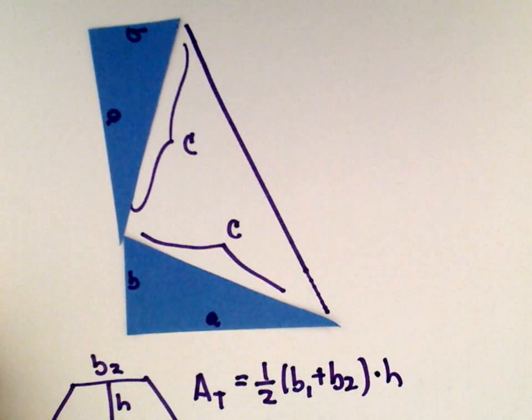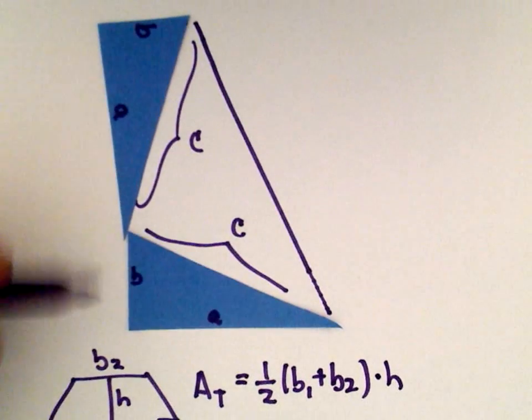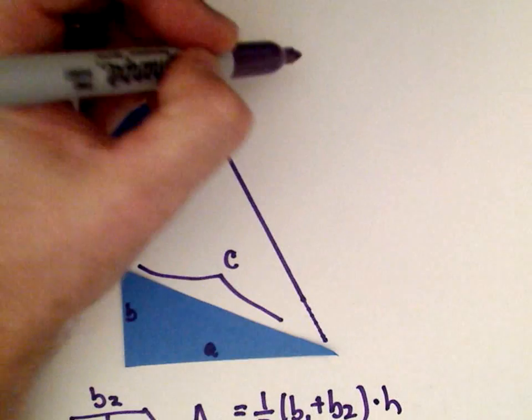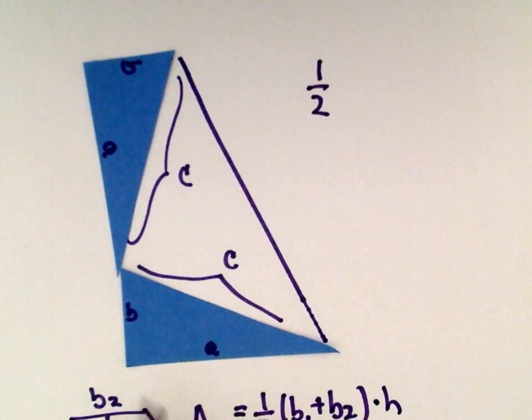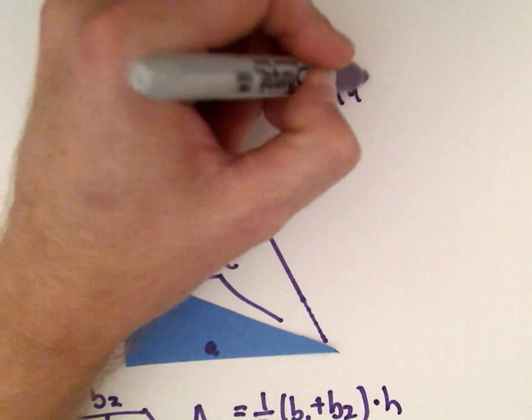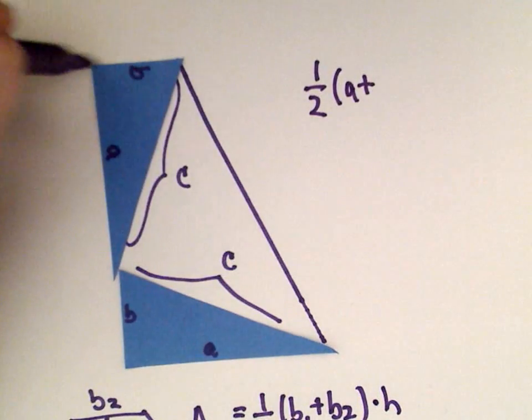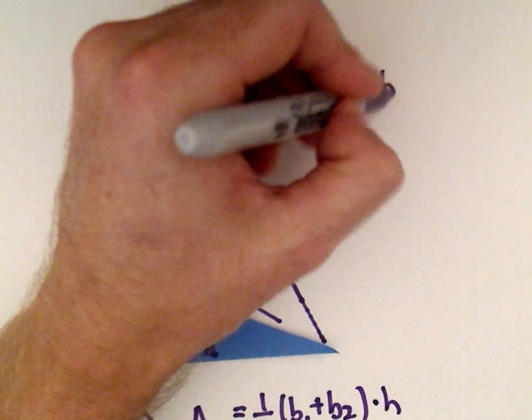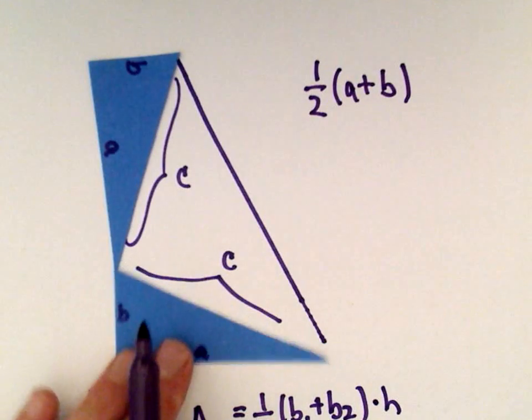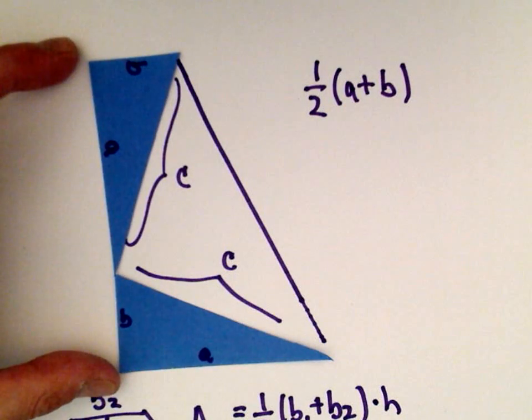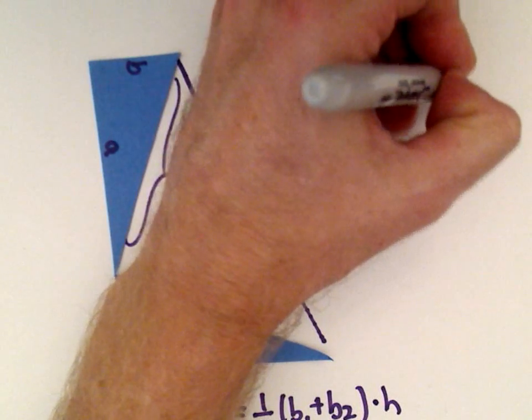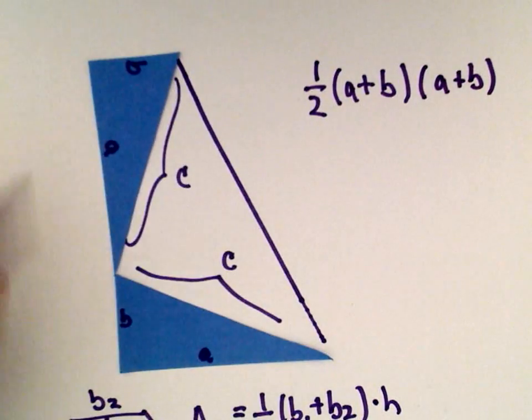If we look at our trapezoid, we've got one half. Base 1 has a length of A. Base 2, if we look at the top, has a length of B. There's our one half base 1 plus base 2. Notice the height corresponds to this left side here, and that's going to be A plus B. That's the area of the trapezoid using this formula.